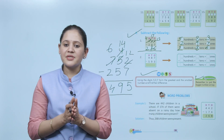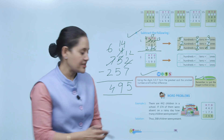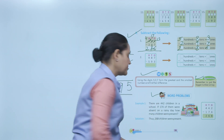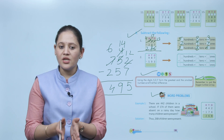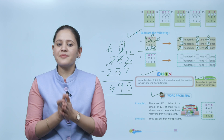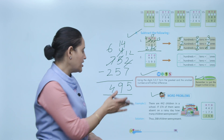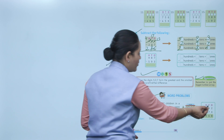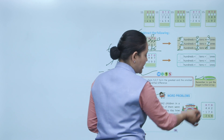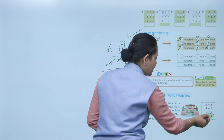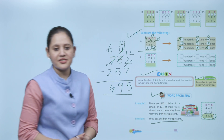Word problems: There are 442 children in a school. If 174 of them were absent on a rainy day, how many children were present? Total students: 442, absent: 174. We subtract: 442−174=268. So 268 students were present on that day.